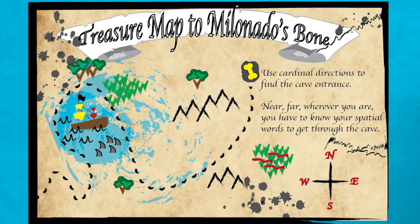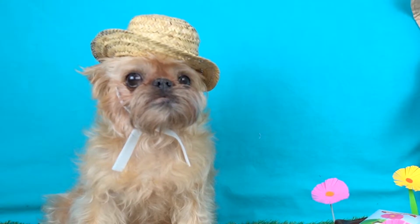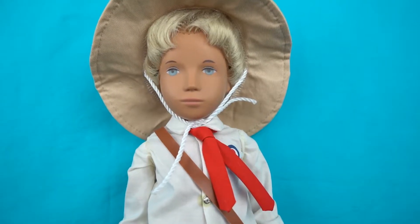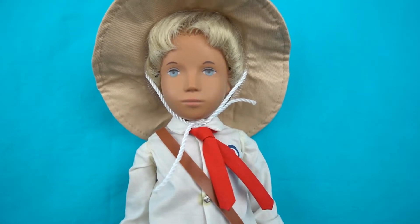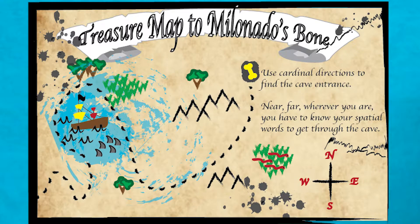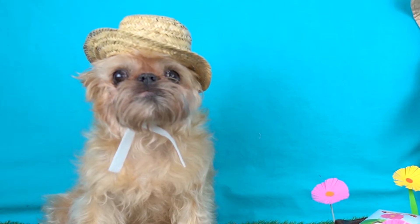Use cardinal directions to find the cave entrance. What are cardinal directions? People all over the world use cardinal directions. This is called a compass rose and it has north, south, east, and west. Cardinal directions are used because north always points to the North Pole and south always points to the South Pole.